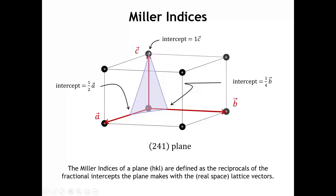If we now take the reciprocals of those fractional intercepts with the unit cell vectors, we come up with the Miller indices. The reciprocal of one-half is two, the reciprocal of one-quarter is four, and the reciprocal of one is just one. So this is a two-four-one plane, and we put these numbers — H, K, and L — inside parentheses.